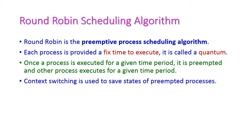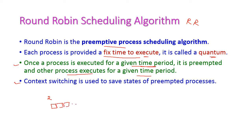Next is Round Robin scheduling algorithm, otherwise called RR scheduling algorithm. It is a preemptive scheduling algorithm. A fixed time will be given to all processes to execute in the CPU — this fixed time is called the quantum. One process is executed for the given time period and then immediately preempted. Then the next process executes for the given time period. For example, if the quantum time is 2, all processes will execute only 2 time units continuously. The context switch is used to save the state of the preempted process.